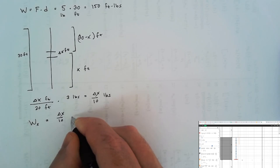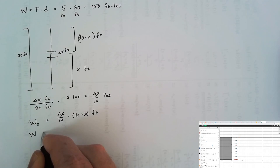So the work done on this little x slice of rope is delta x over 10 pounds times 30 minus x feet. To approximate the work done on all of the rope, we sum up all of these little pieces of work to get a Riemann sum, which converges to a definite integral.